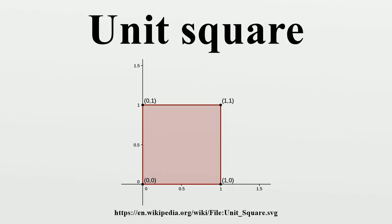That is, the unit square is the Cartesian product I times I, where I denotes the closed unit interval.